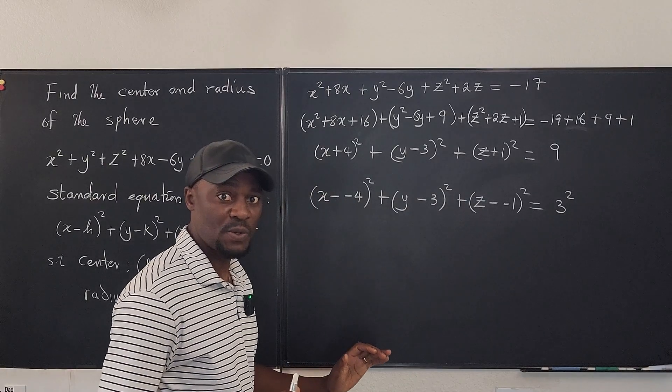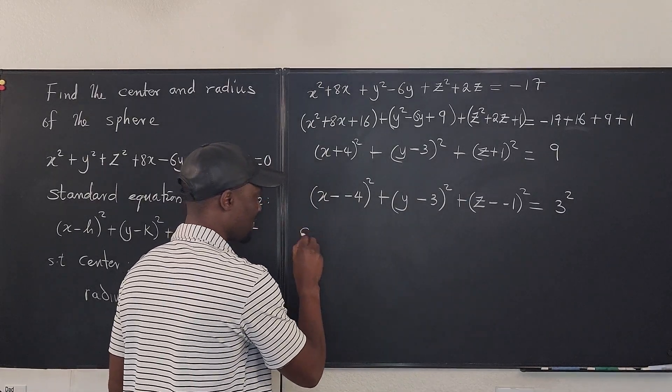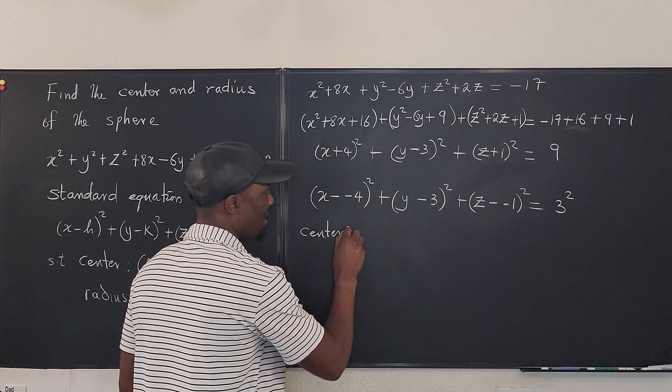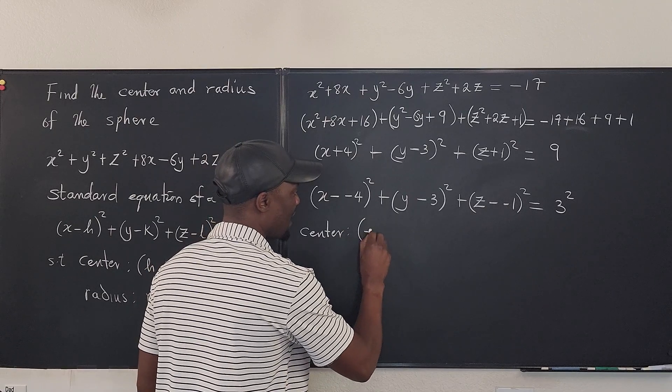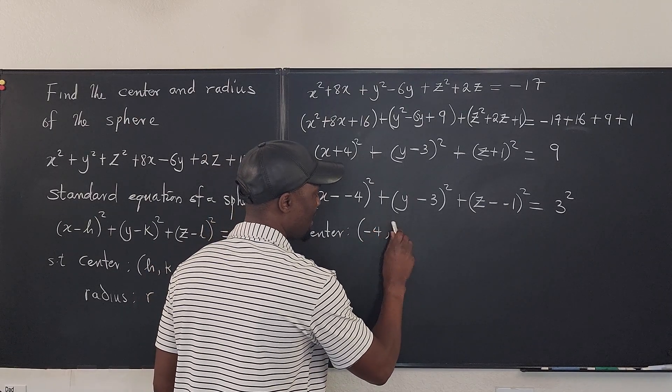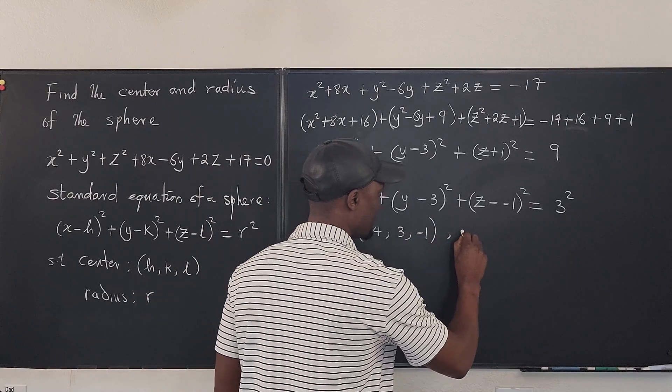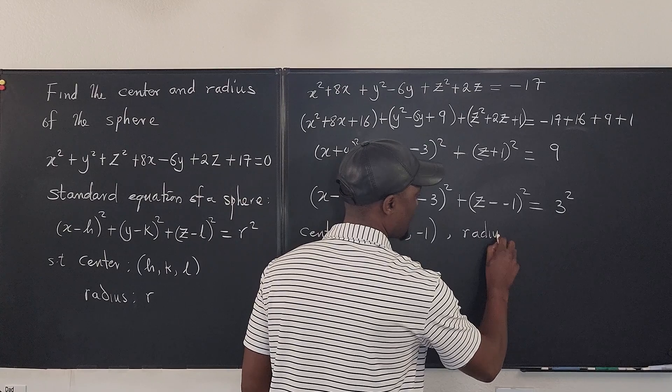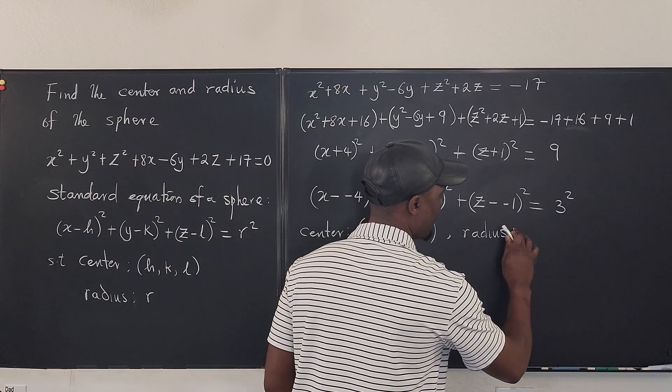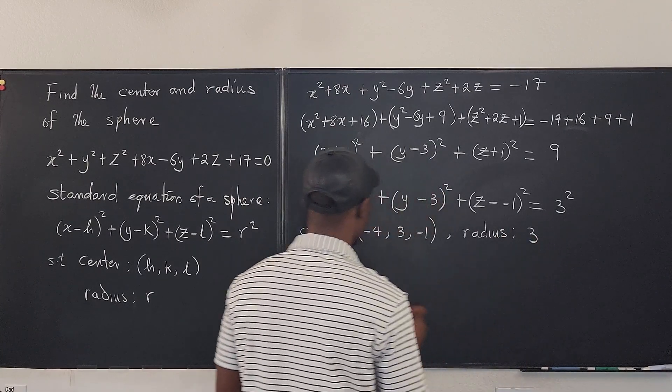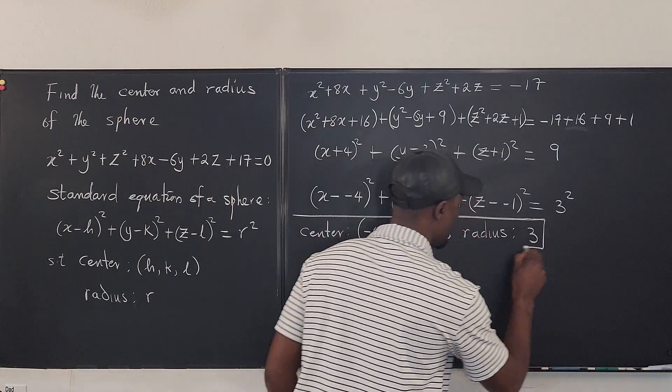So we can conclude that the center of this is (-4, 3, -1). And then the radius is 3. That's the answer to this.